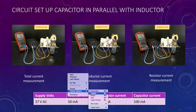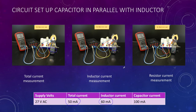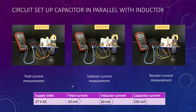Measuring the total supply current gives about 50 milliamps. The inductor is in parallel with the capacitor — picking up both wires in the inductive leg shows about 60 milliamps flowing there. Finally, measuring the capacitive leg shows about 100 milliamps. This is close to the 90 milliamps we saw previously; the small difference depends on exactly where the clip-on ammeter is positioned.